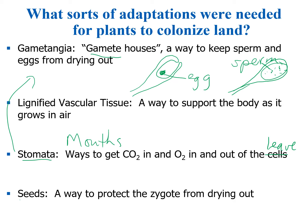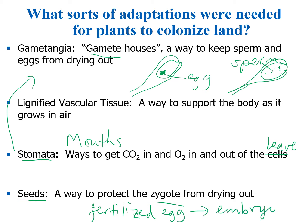Another major structure that evolved are seeds. Seeds are ways to protect the zygote from drying out. The zygote is a fertilized egg, and a zygote then grows into an embryo. We'll see a picture of a seed in a moment.